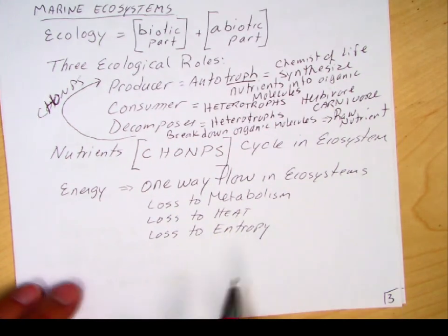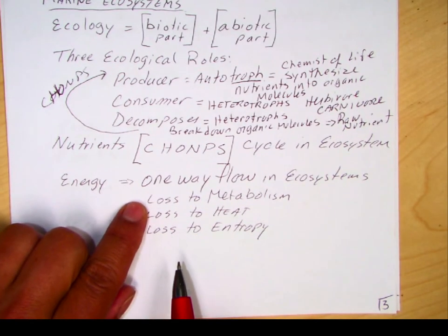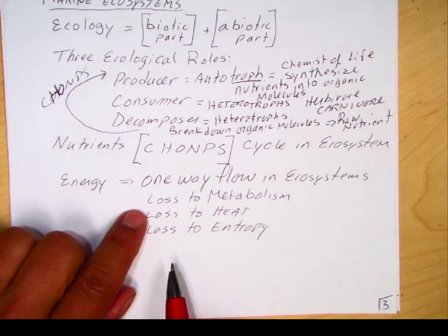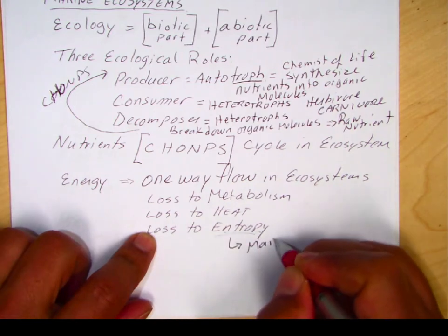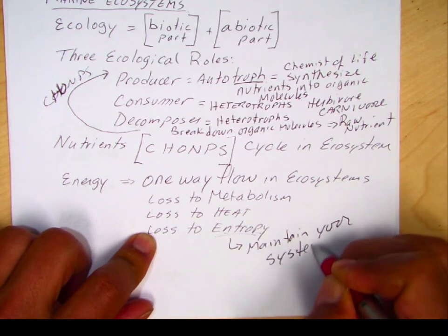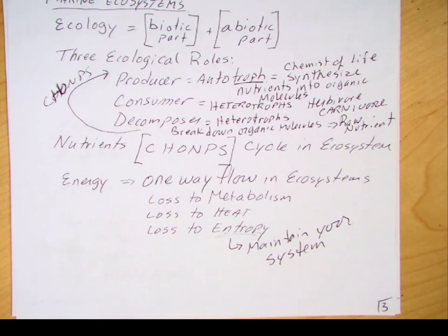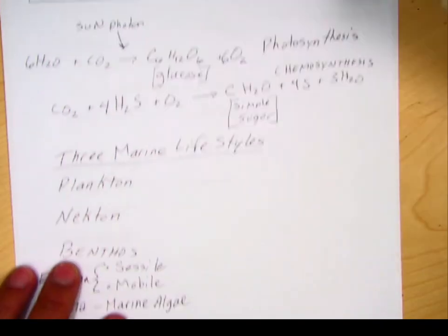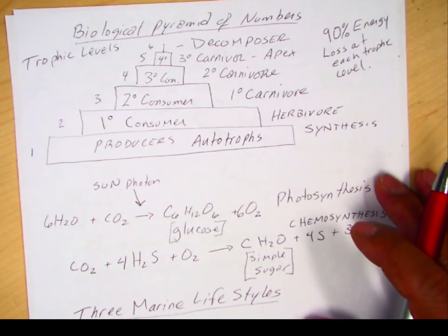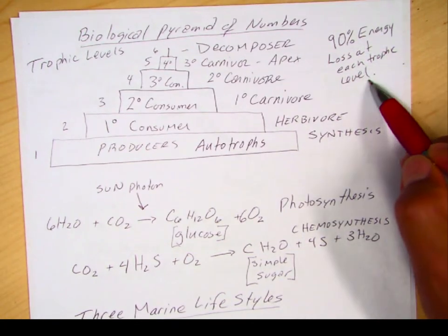Whereas nutrients cycle, energy is a one-way flow in an ecosystem. Energy is either lost to metabolism, lost to heat, or lost to entropy. Think of entropy as what it takes to maintain your system — you need energy to maintain your system, like when you get sick your body works to make you feel better, and that requires energy. In ecosystems, 90% of the energy is lost at each trophic level.